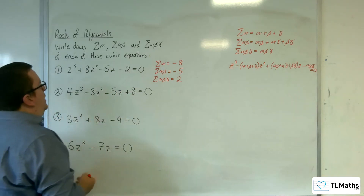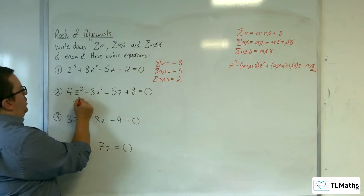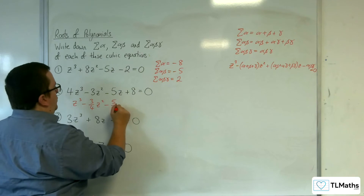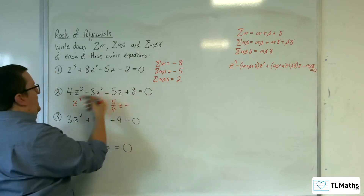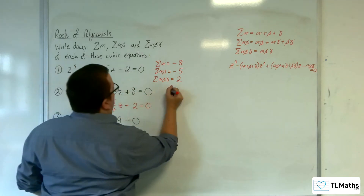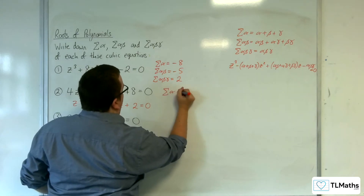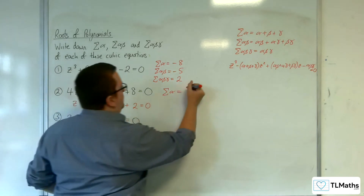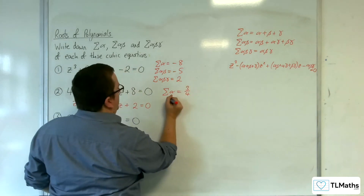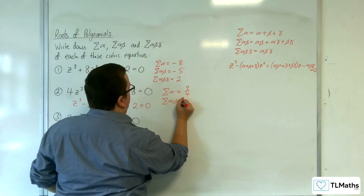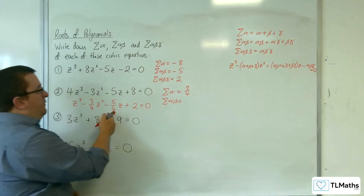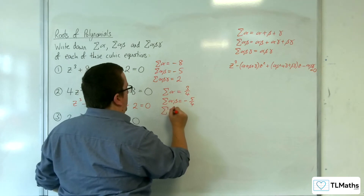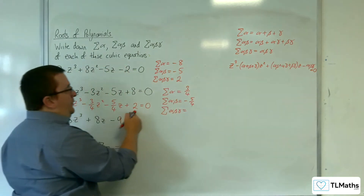For the second one, you need to divide through by 4 first. So: z cubed, take away three quarters z squared, take away five quarters z, plus 8 divided by 4, so 2, equals 0. The sum of the roots is going to be equal to three quarters. The sum of the product pairs is going to be equal to minus five quarters. And the product of the three roots is going to be equal to minus 2.